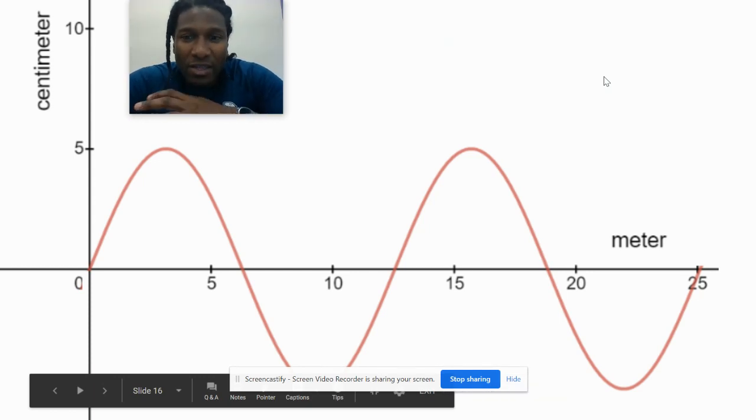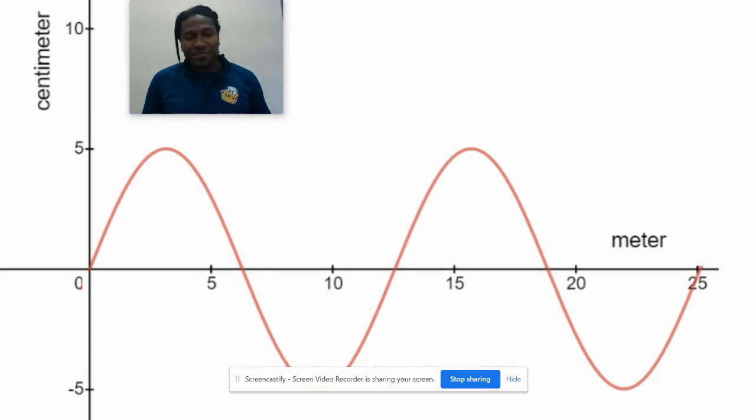We're back looking at this wave again, and there's another feature about waves that we should talk about, which is amplitude. Amplitude is the distance from the equilibrium to a trough.